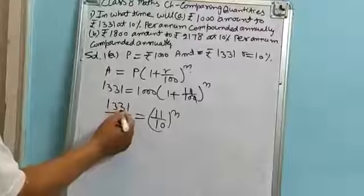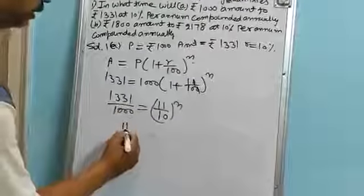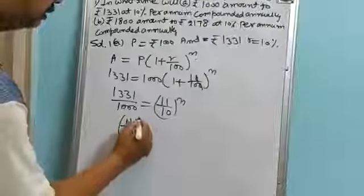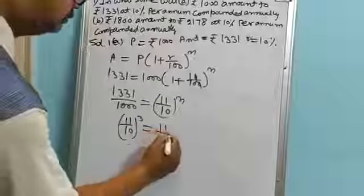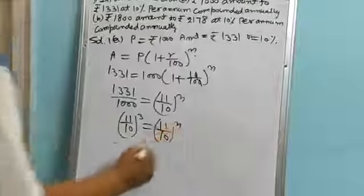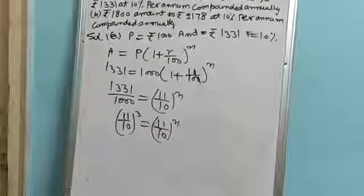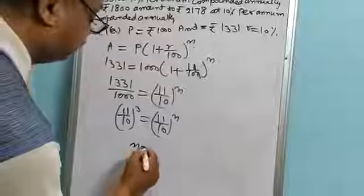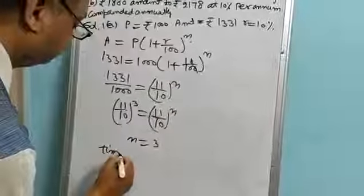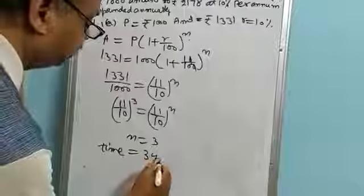Make this also as 11 by 10 to the power, that is 11 by 10 to the power 3. And when the bases are the same and the powers are also equal, N is equal to 3.